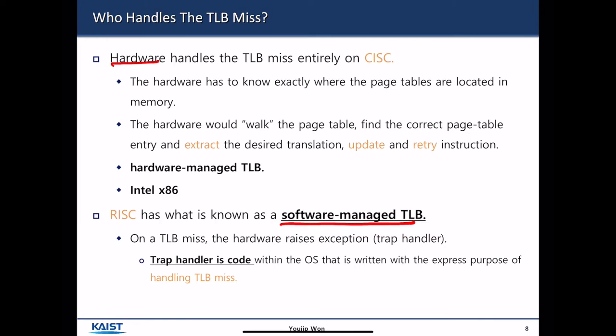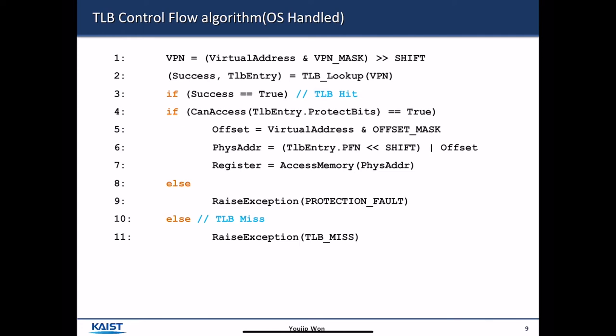Hardware-managed TLB is pretty inflexible. RISC architectures typically use software-managed TLB. When a TLB miss happens, instead of hardware handling the miss, it simply raises an exception and lets the trap handler take care of it. Trap handler code within an operating system is written with the purpose of handling TLB miss. This is the control flow when TLB miss is serviced by software: when TLB miss happens, it raises an exception and the TLB miss handler takes care of the rest.